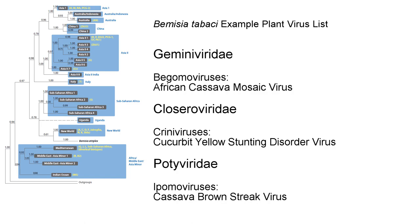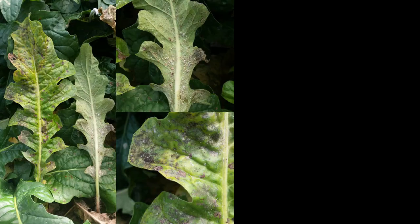Some of the most destructive examples include tomato yellow leaf curl virus, which can be devastating to tomato crops while symptomless in other hosts, and the African cassava mosaic virus, both of which are begomaviruses.